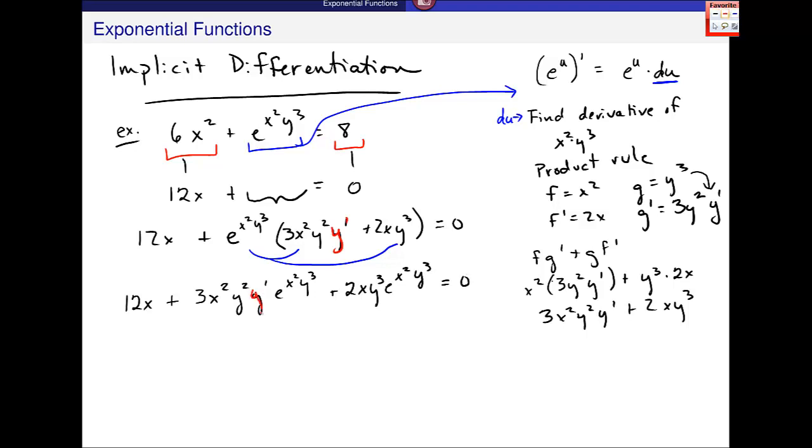12x plus 3x squared y squared y prime e to the x squared y cubed plus 2xy cubed e to the x squared y cubed is equal to 0. And here's my y prime piece. So I will subtract both these other pieces, minus 12x and minus 2xy cubed e to the x squared y cubed, from this side and from the other side as well.